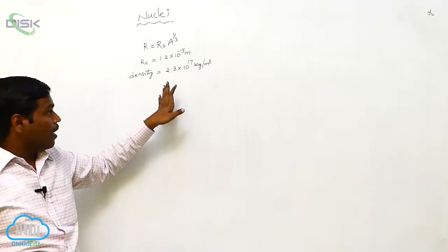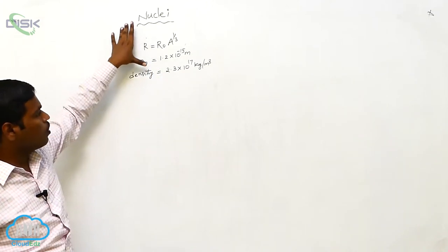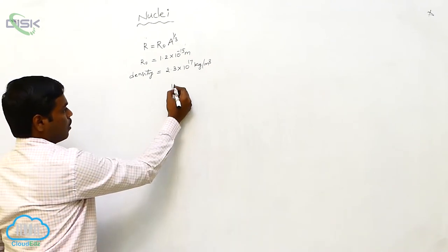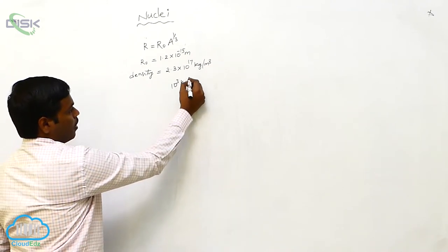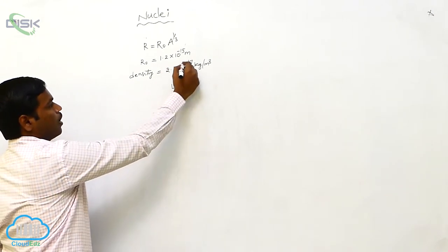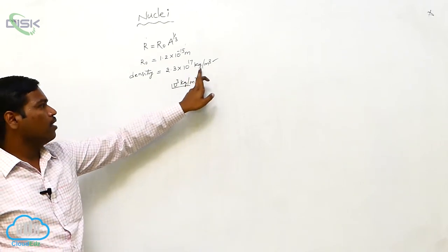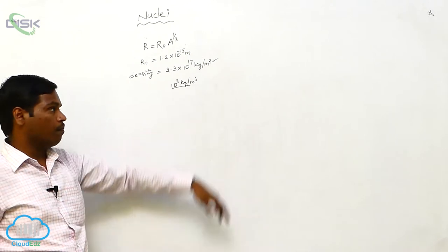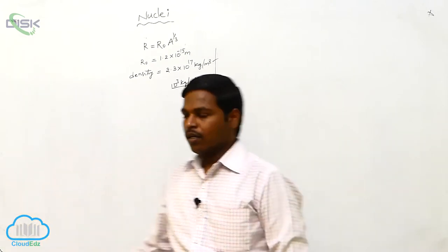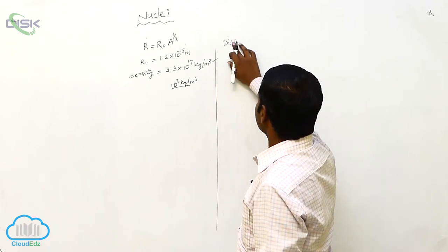Comparing to water, the density of water is 10 to the power of 3 kg per meter cube, but the density of the nucleus is far greater — 2.3 into 10 to the power of 17 kg per meter cube. After these observations, the neutron was discovered.